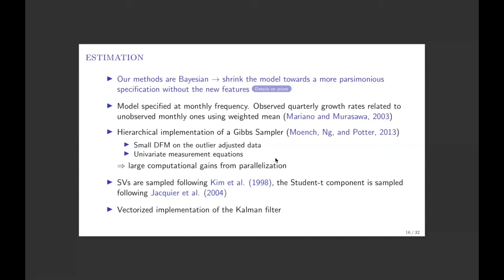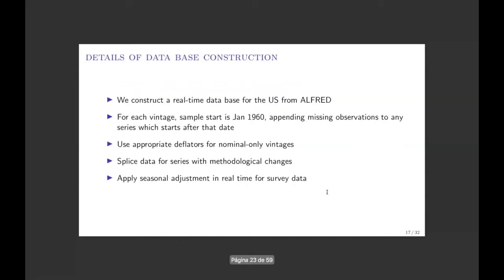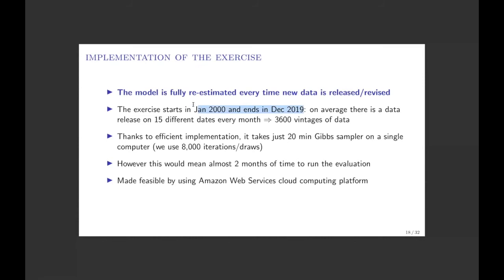For the out-of-sample evaluation, we use real-time data — vintages of data as they were available exactly at that time, starting generally from 1960. We use the appropriate deflators downloaded in real time, and apply seasonal adjustment in real time. Survey data is often claimed to be unrevised, but their seasonal adjustment is a two-sided filter and therefore subject to revisions. We have the data as it was and apply seasonal adjustment every single day from January 2000 to December 2019, fully re-estimating the model and recomputing all posterior quantities whenever new data arrives.